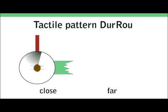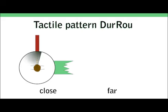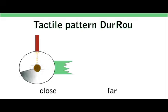For the third pattern, a long and rough vibration indicates the direction of a close turn, while the vibration is smooth when the turn is distant.